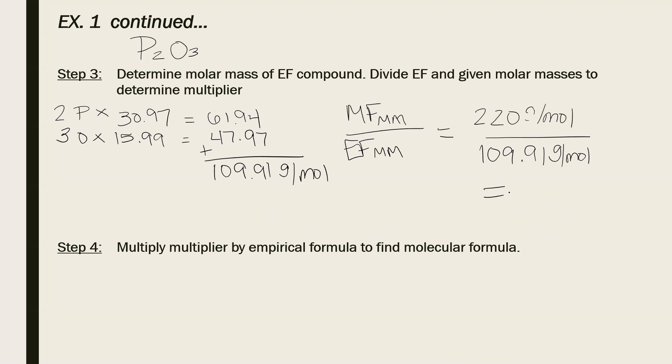And I get 2.001637704. I just want to show you that it's very, very, very close to two. So I'm just going to say two. So this is my multiplier. Two is my multiplier.